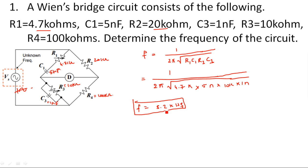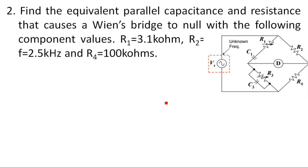Now coming to the second type of problem, which is very important: find the equivalent parallel capacitance and resistance that causes a Wien bridge to null with the following component values. In the Wien bridge circuit, one arm has a parallel combination of resistance and capacitance. The question asks for these parallel R and C values to distinguish them from the series R1 and C1 combination.